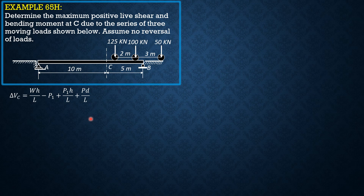First, when the 125 kN load is just to the right of C: there will be no minus P1 because P1 is the 125 kN load — it has not yet moved to the left, so it is still over C. That term is zero. There is also no incoming load, because the total span distance is exactly 2 plus 3 equals 5, so no load is entering the span. The W·h over L term is obviously positive.